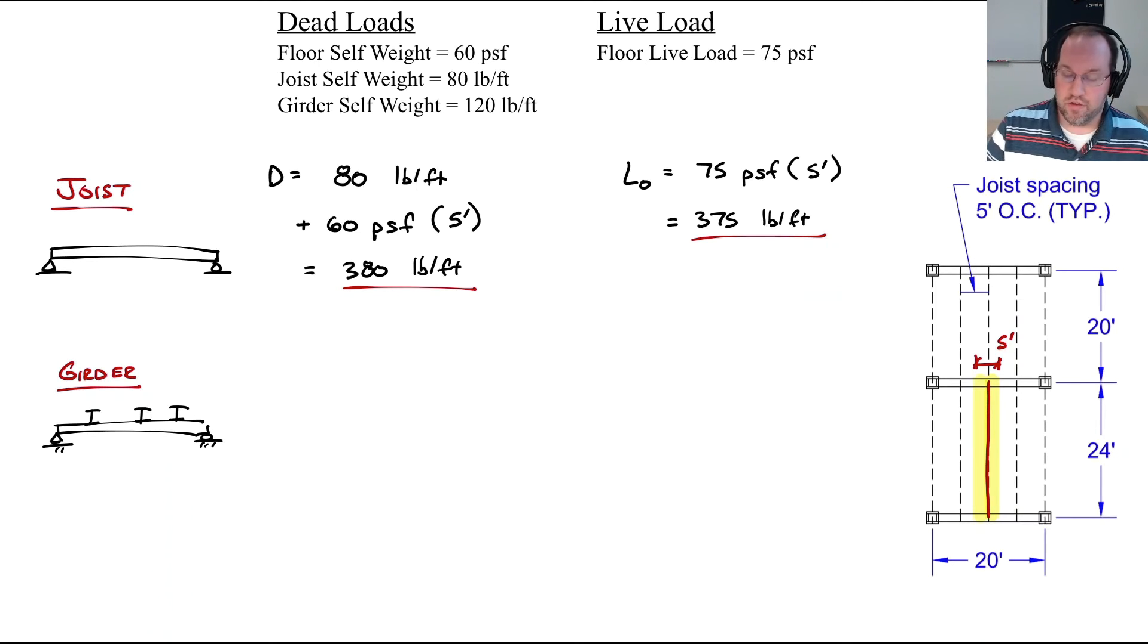Going down to the girder, we have three joists supported by the girder and two joists supported directly to the column, which I'm not going to consider. Each of those joists is going to apply a point load to my girder, plus I can have some additional distributed load. So I'm going to have to consider distributed and point loads separately.